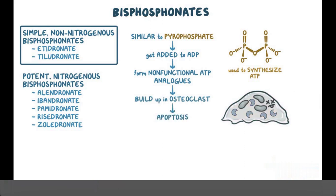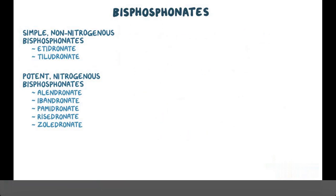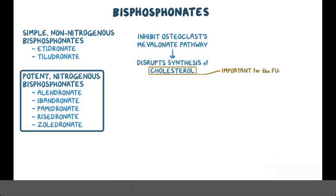On the other hand, potent nitrogenous bisphosphonates work by inhibiting the osteoclast mevalonate pathway, which disrupts the synthesis of cholesterol. Since cholesterol is important for the function of the cell membrane and many enzymes, this decrease in cholesterol causes the osteoclasts to become non-functional.